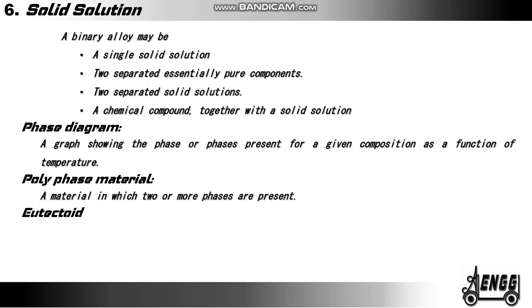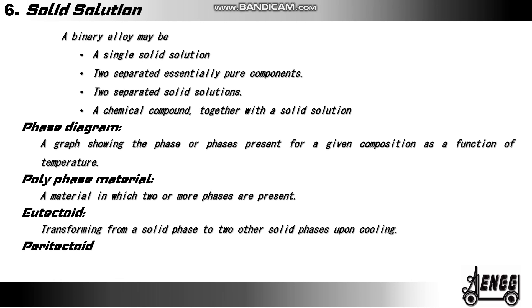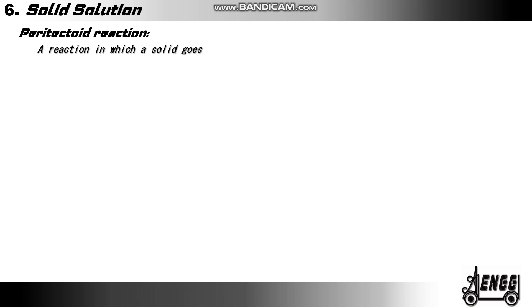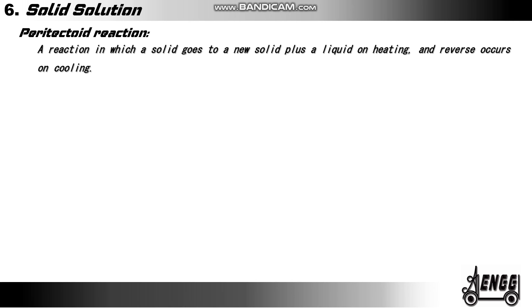Eutectoid: transforming from a solid phase to two other solid phases upon cooling. Peritectoid: transforming from one solid phase to a third solid phase upon cooling. Peritectoid reaction: a reaction in which a solid goes into a new solid plus a liquid on heating, and the reverse occurs on cooling.